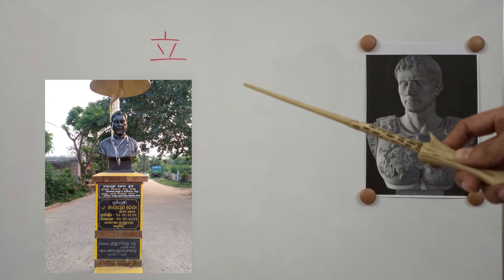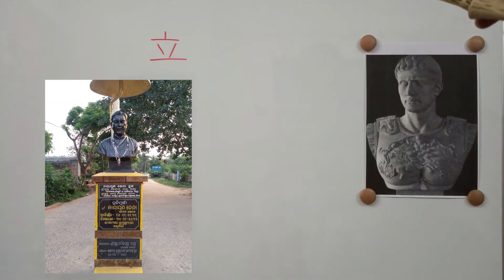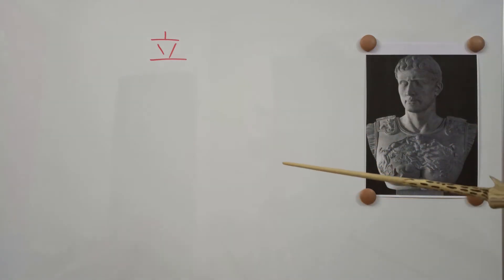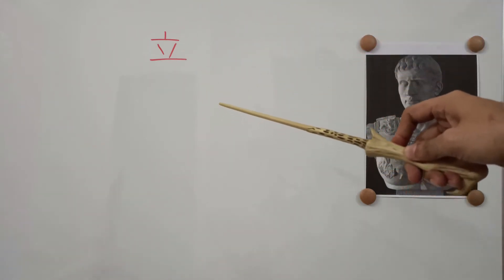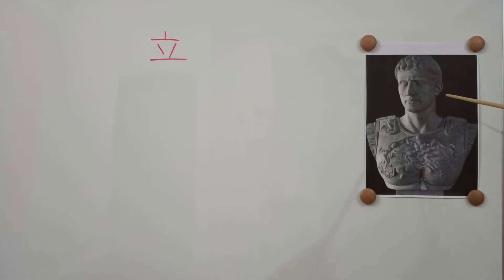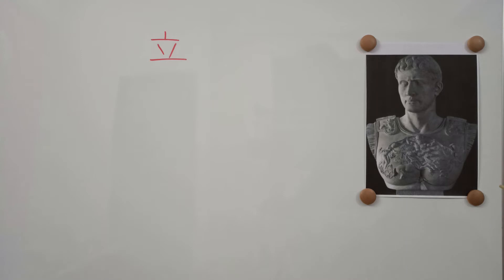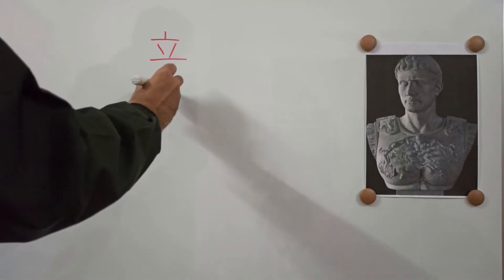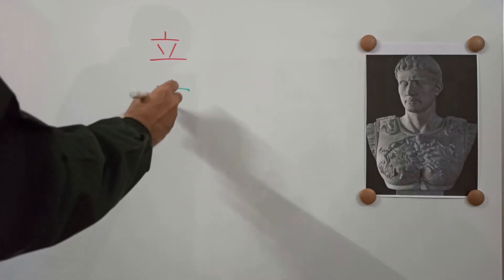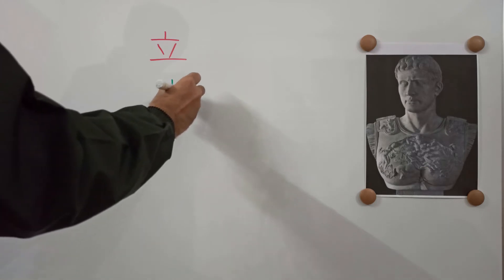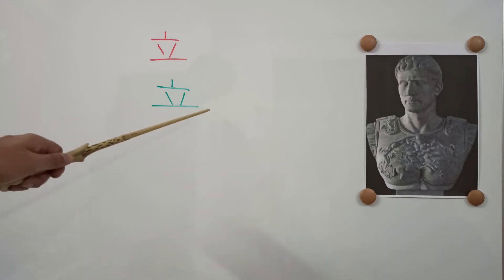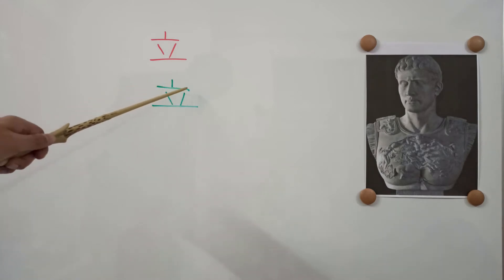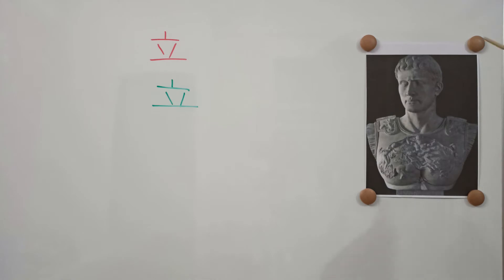This bust sculpture was placed right in front of a street junction. First we will understand the stroke order of this kanji, then we will find a connection with this image and remember this kanji in a very easy and natural way. One, two, three, four, five — this bottom line is longer than this upper line.